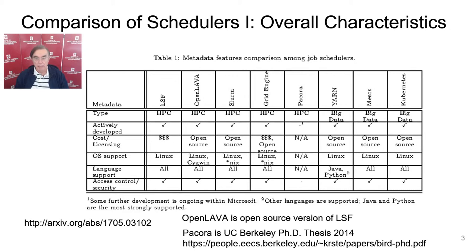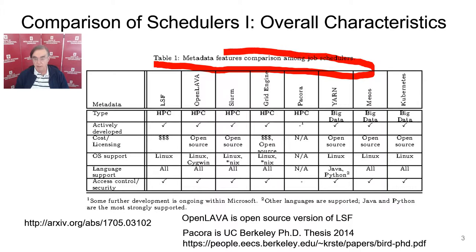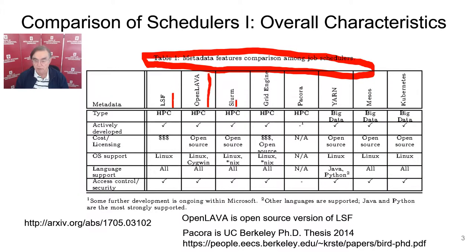The first table gives the overall structure of the schedulers. We have: LSF, a well-known commercial scheduler; OpenLava, which is an open source version of that; Slurm, which is the most common HPC Linux scheduler; Sun Grid Engine, which originally came from a small company in Germany, was purchased by Sun, which was purchased by somebody else; and Pecora, which is a PhD thesis from Berkeley in 2014. Those first five are all HPC schedulers.